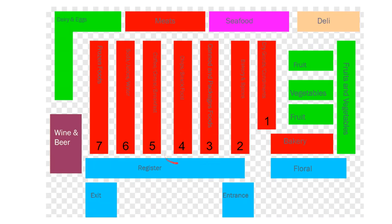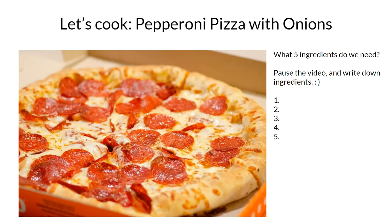Here is the map again with numbers added to represent the aisles — aisle two, aisle three, aisle five. I have an activity for us. Let's cook a pepperoni pizza with onions, but first we must buy the ingredients. What five ingredients do we need? Please pause the video and write down the ingredients.